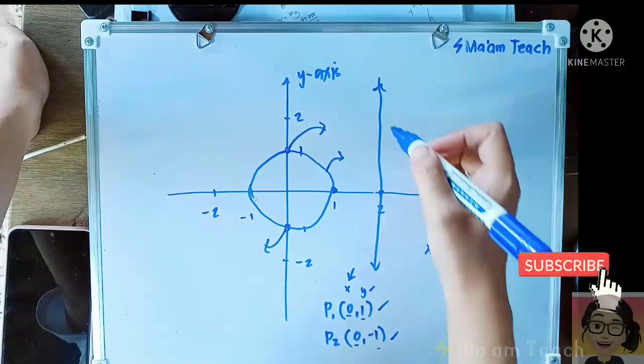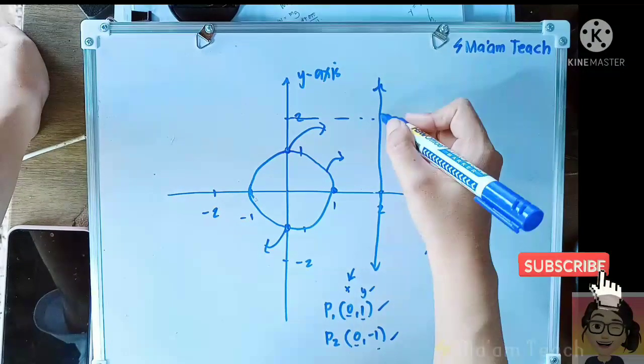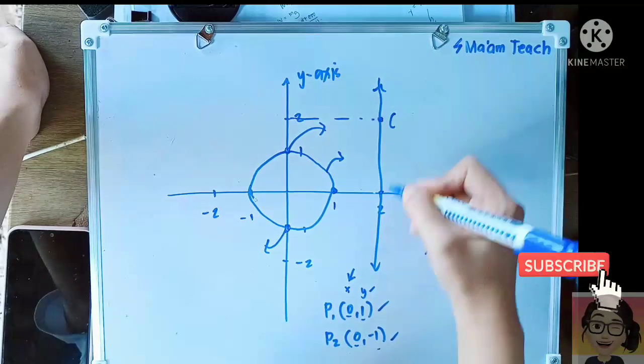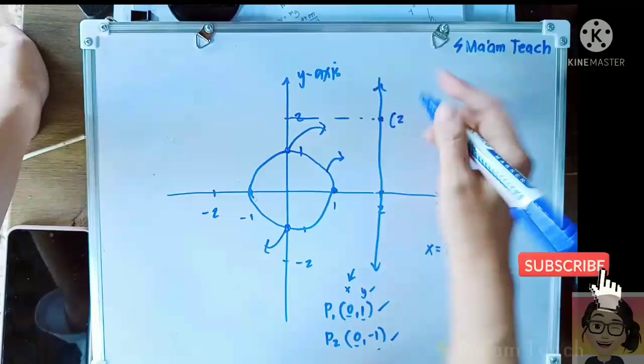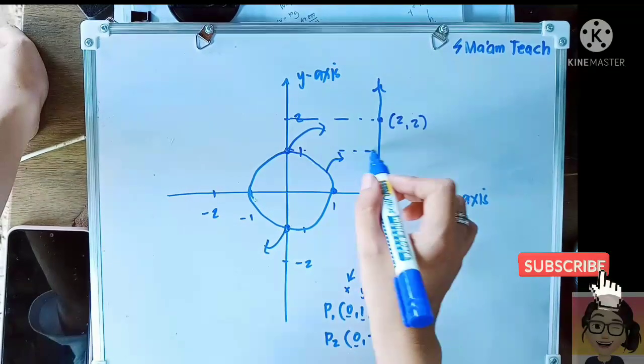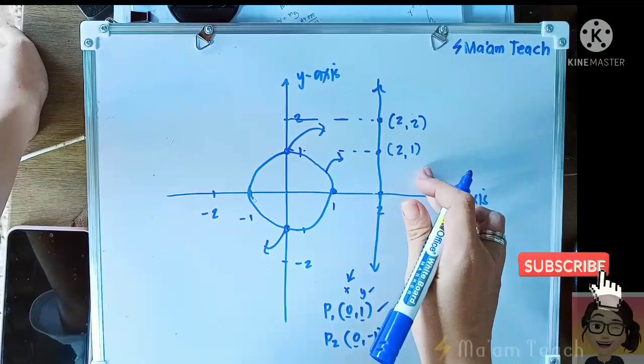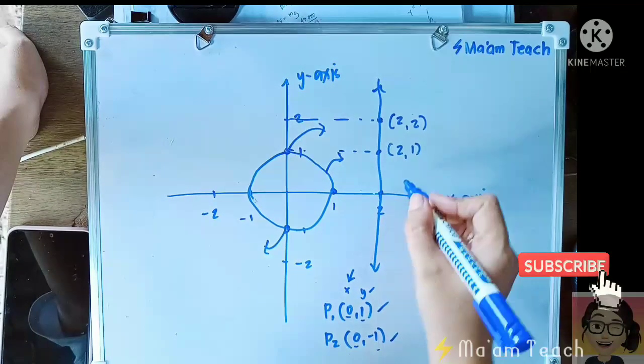But at this point, if you trace, this is 2. So this is (2,2). Can you follow? Well this one, if you trace this point, is (2,1). Can you follow?